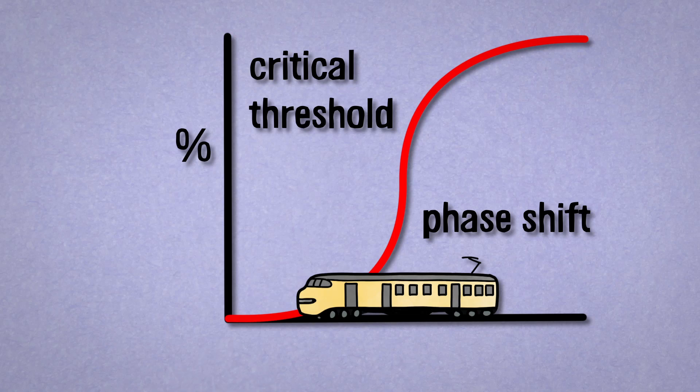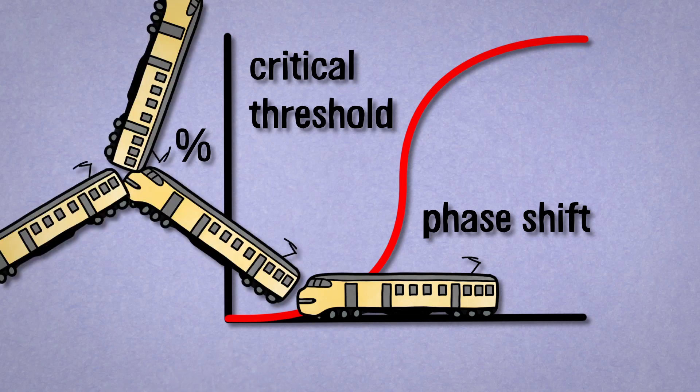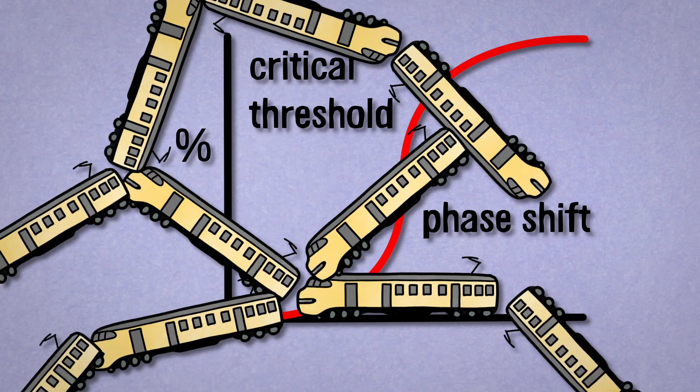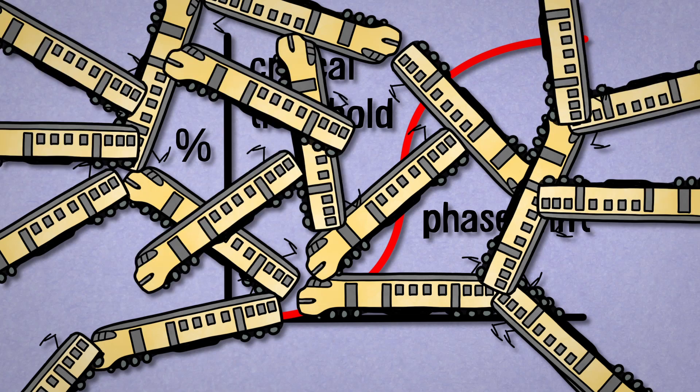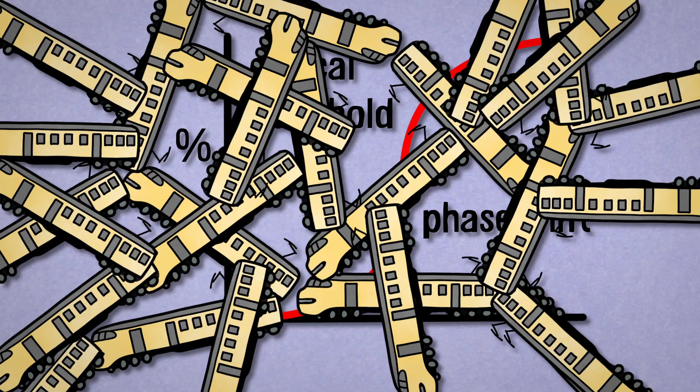A network of train links can be loaded more and more heavily, without any signs of stress. Trains keep rolling. But when a critical threshold is passed, suddenly a phase shift appears, and problems escalate quickly.